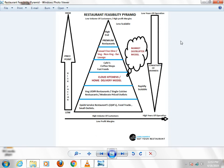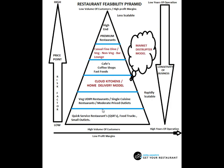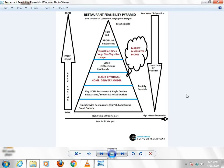It's a little in-depth video, but it's very important to think about which type of restaurant you have to open — how much you want to invest, how much risk you want to take, what price point should be, how many years you want to run, and if you want to scale or just have one restaurant. These things are all shown in the restaurant feasibility pyramid.